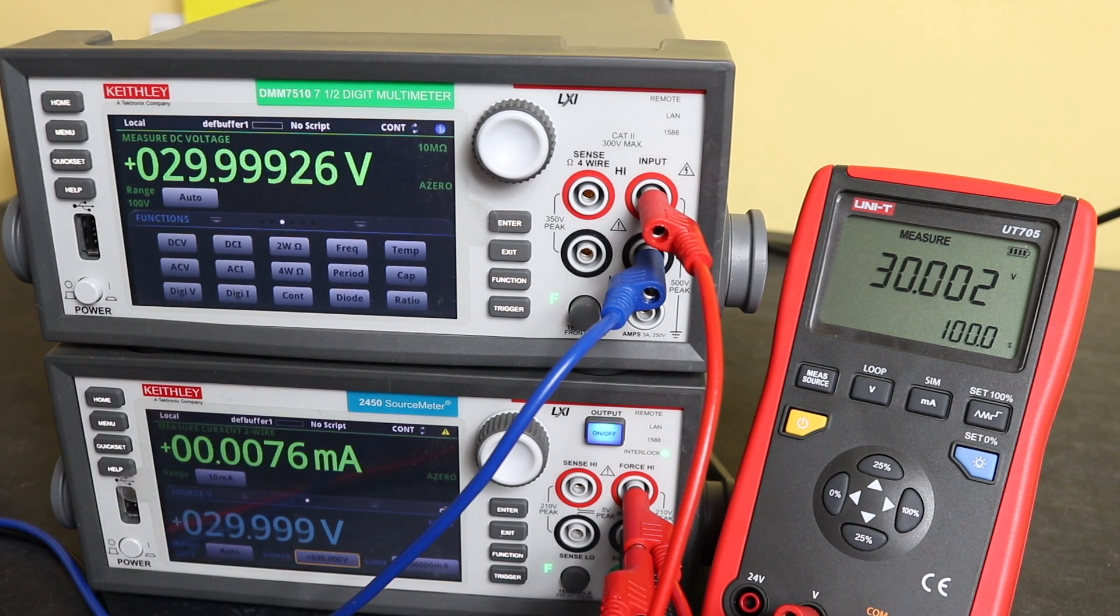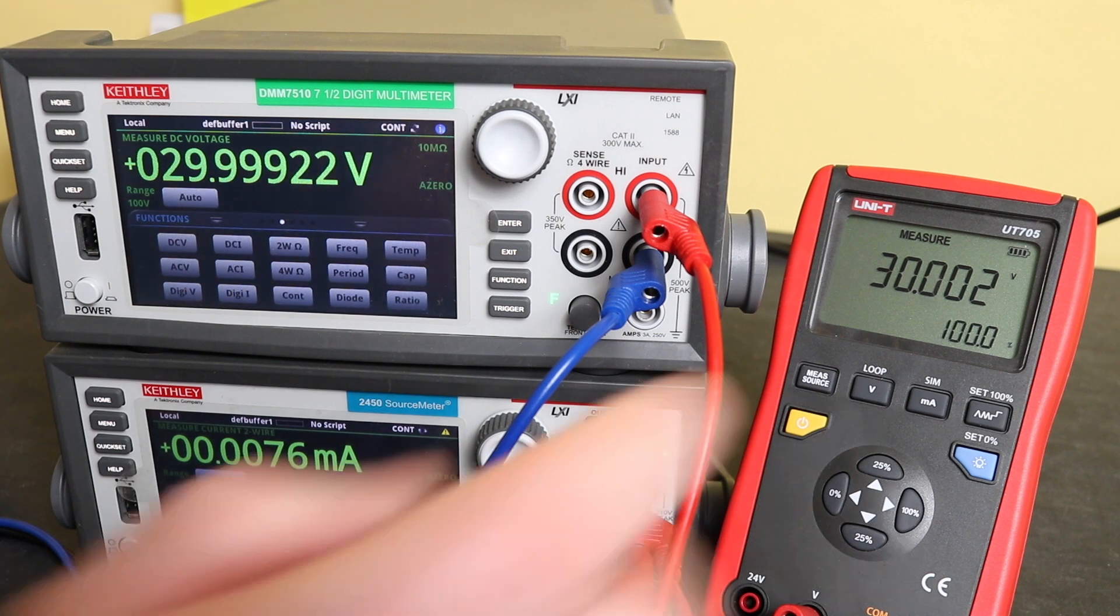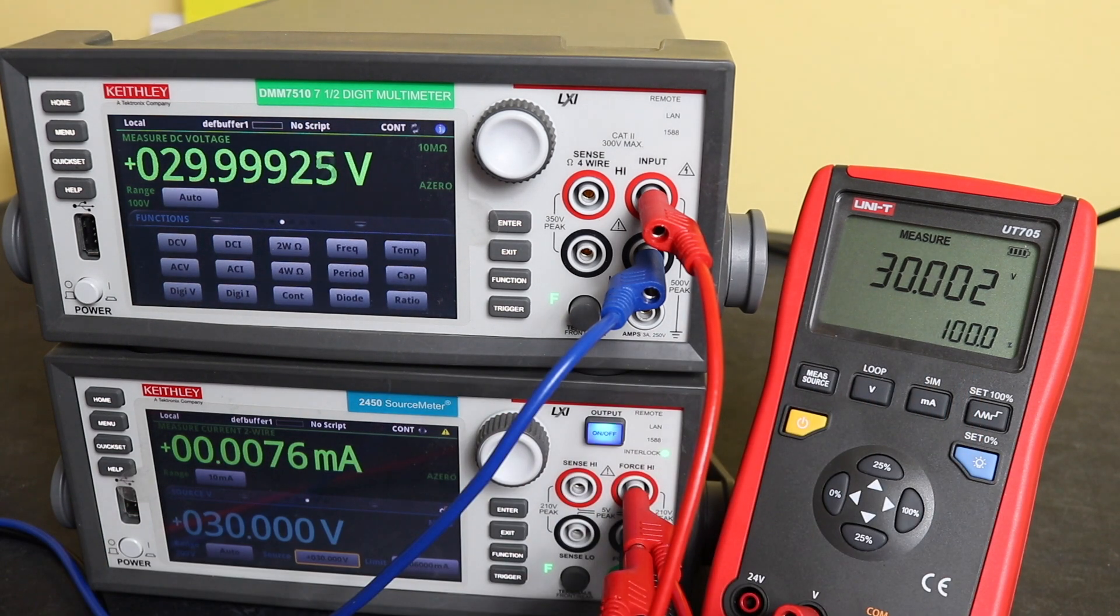And our final one is 30 volts. So there's our final measurement there. 30 volts, we are reading 30.002. Correlates pretty well, 29.999262928 on the 7510 there. Tolerance-wise we should be between 29.992 and 30.008 on the unit, so well within specification and our scaling there is 100 percent. Excellent. So we'll have a quick shuffle around again and we will do some milliamp source checks.